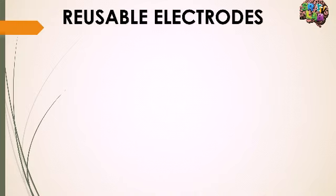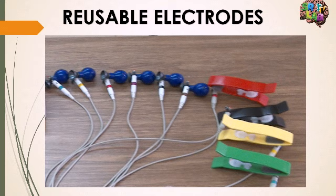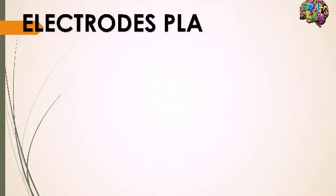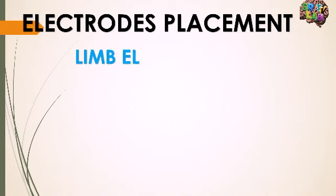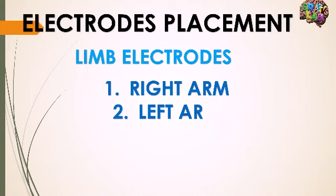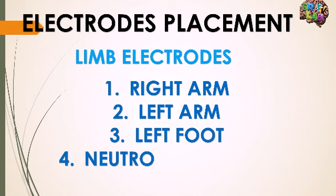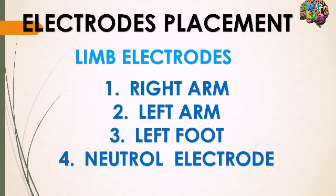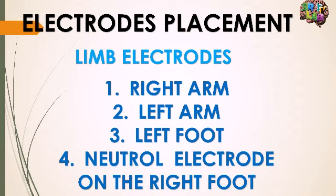Some electrodes are reusable — you use them on one patient, clean them, and reuse them on another patient. Now let's see electrode placement. For limb electrodes: the first is placed on the right arm, then left arm, left foot, and there is a neutral electrode placed on the right foot.